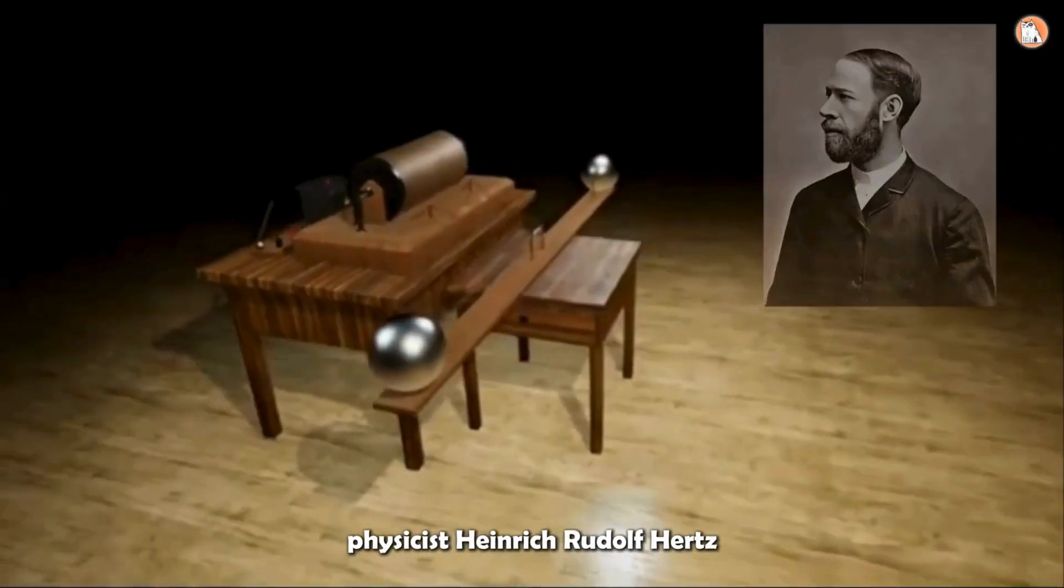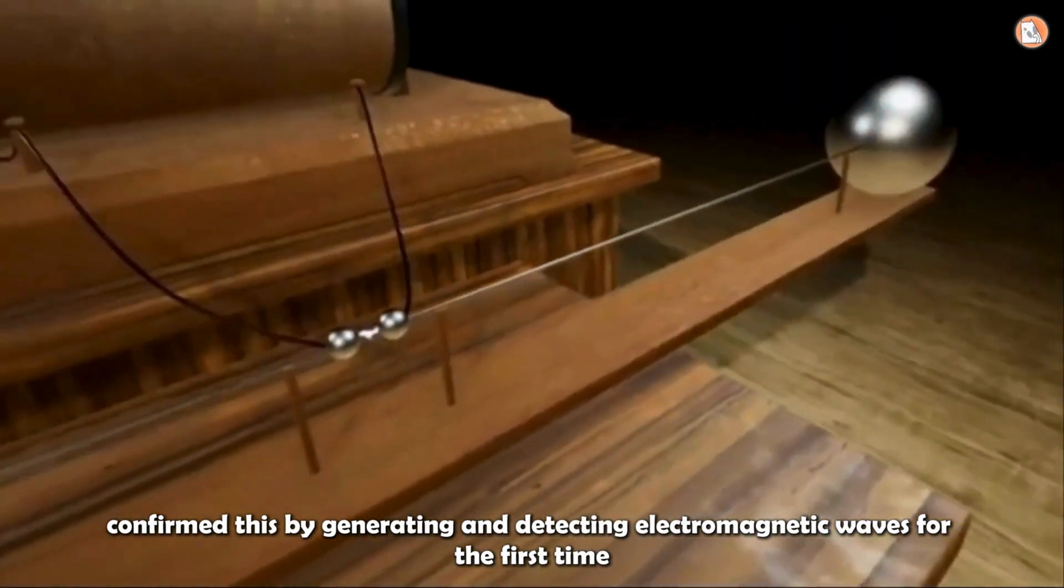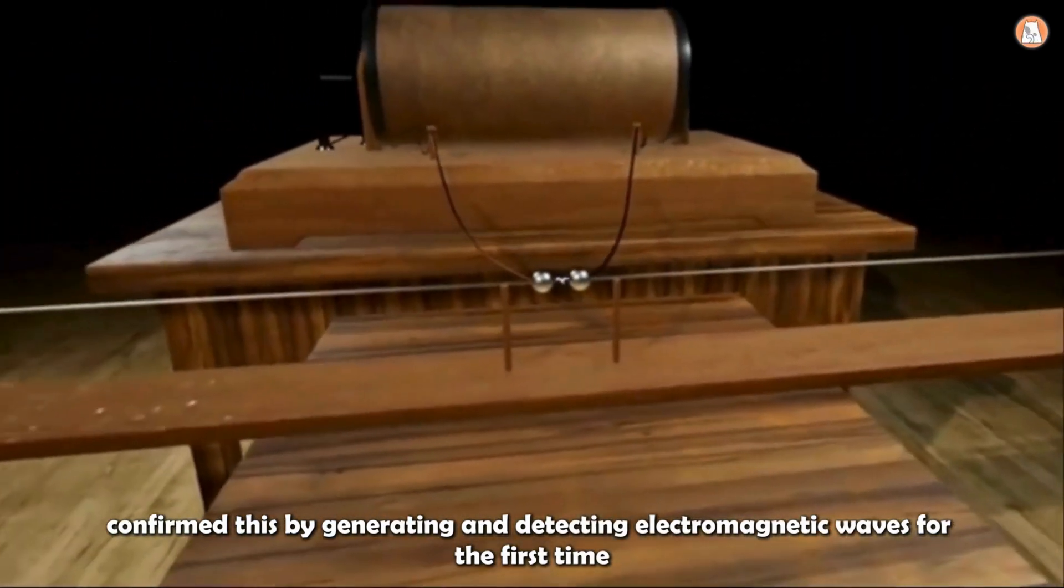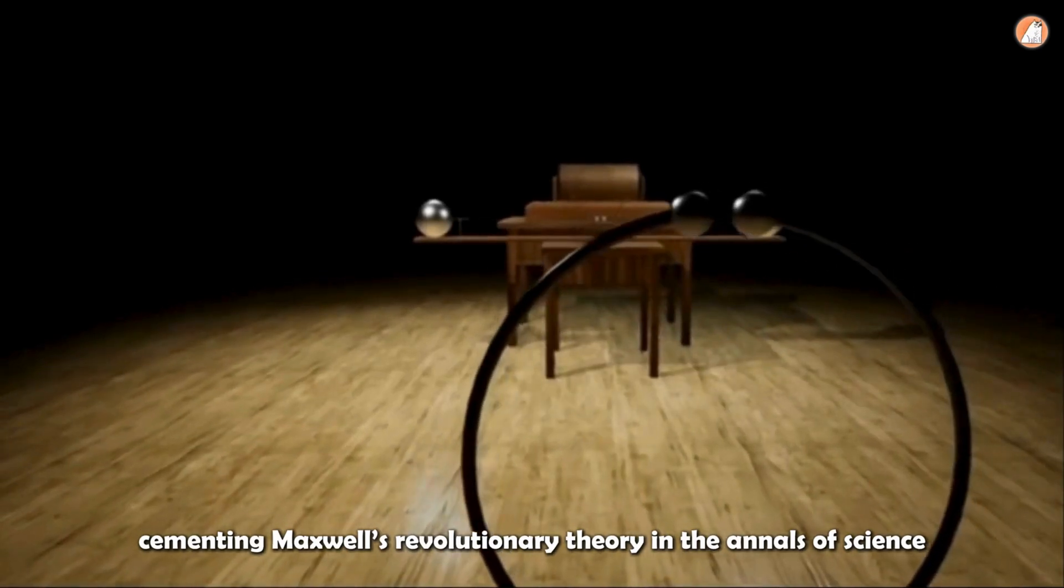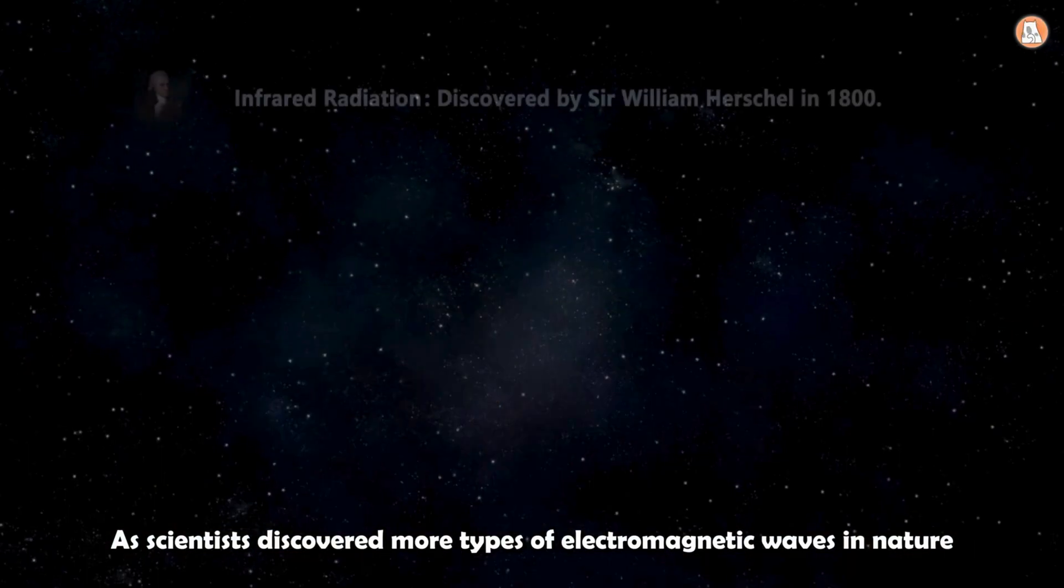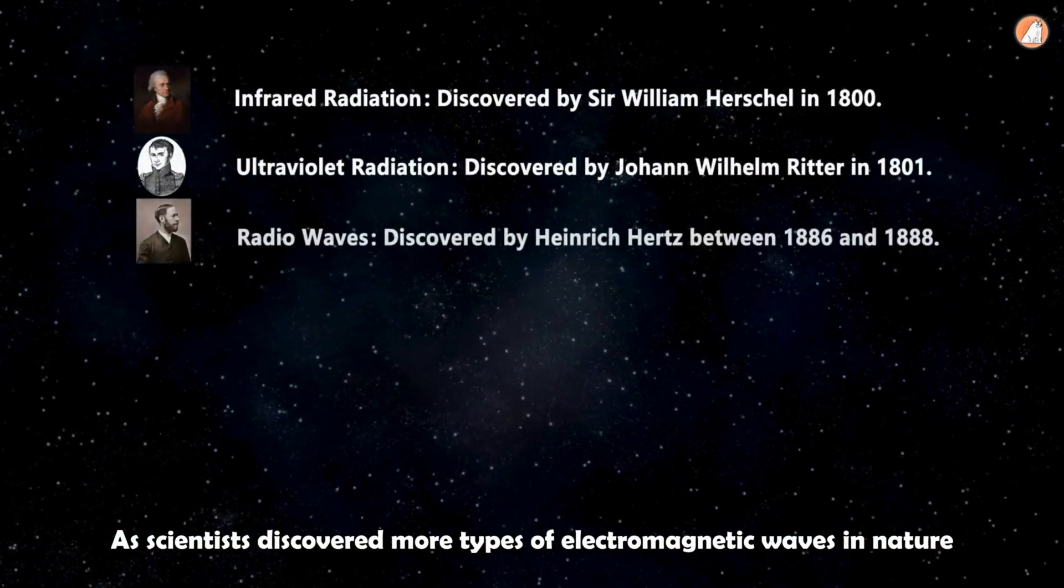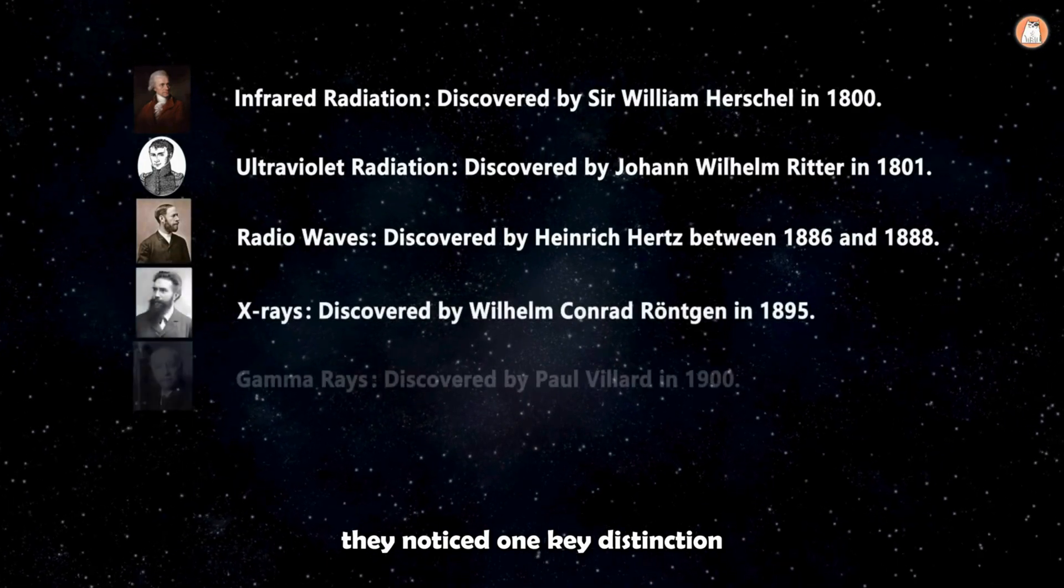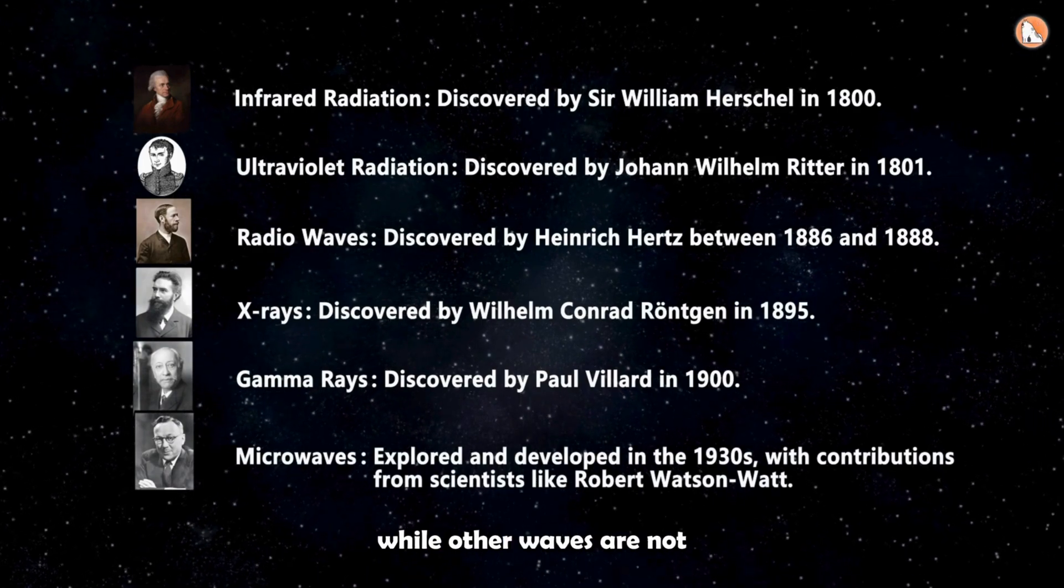Twenty years later, physicist Heinrich Rudolf Hertz confirmed this by generating and detecting electromagnetic waves for the first time, cementing Maxwell's revolutionary theory in the annals of science. As scientists discovered more types of electromagnetic waves in nature, they noticed one key distinction. Light is visible to the human eye, while other waves are not.